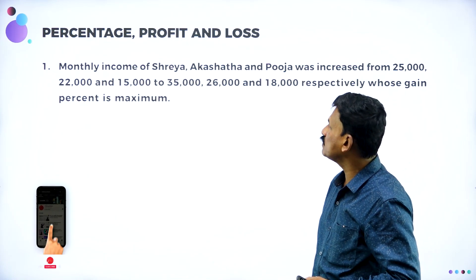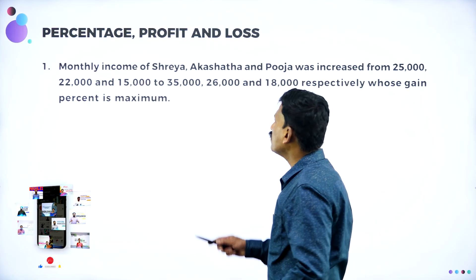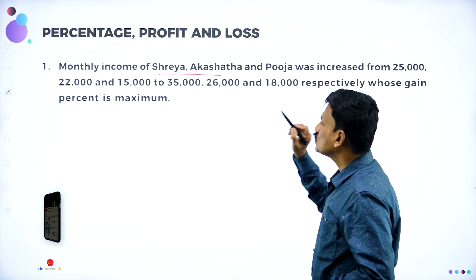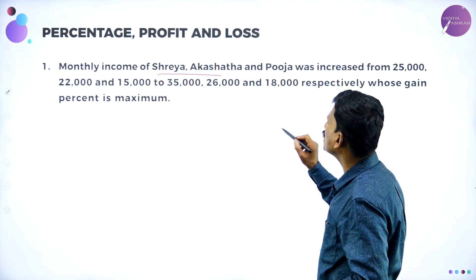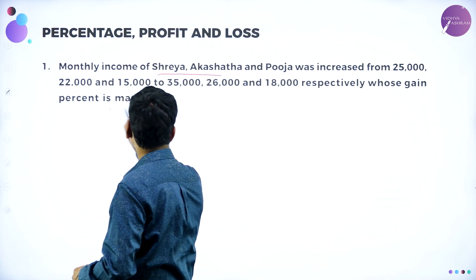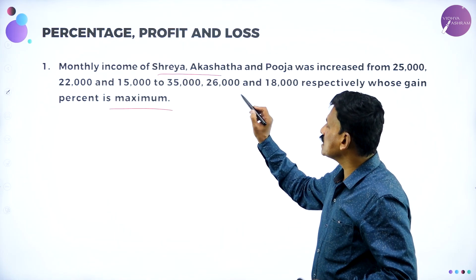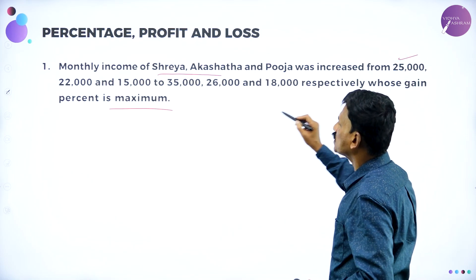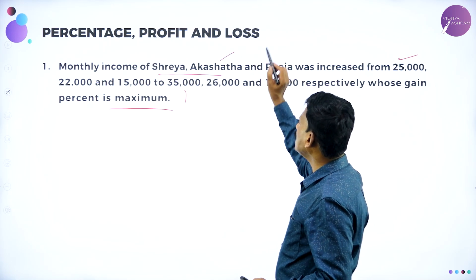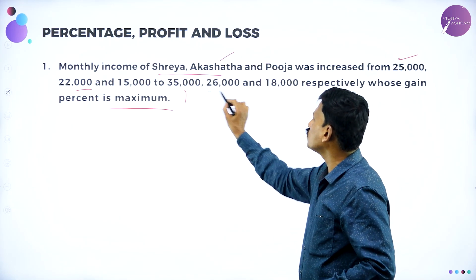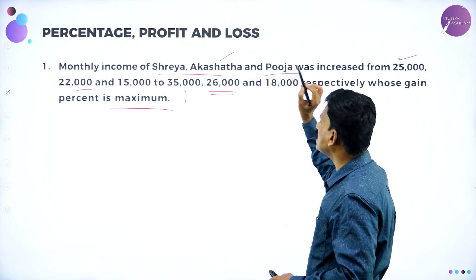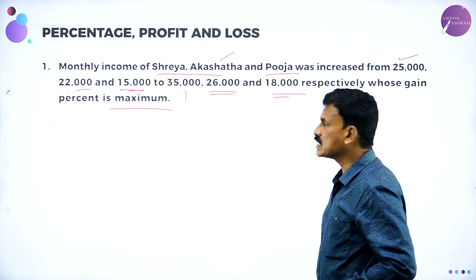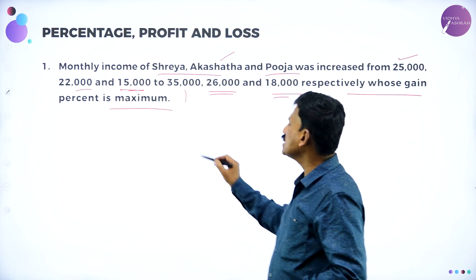These are all important problems for 3 months and 5 months exams. The monthly income of Shreya, Akshata, and Puja was increased: Shreya from 25,000 to 35,000, Akshata from 22,000 to 26,000, and Puja from 15,000 to 18,000 respectively. Who gains the maximum percent?